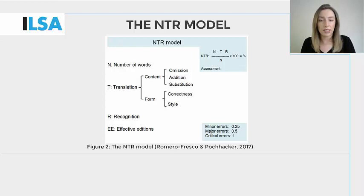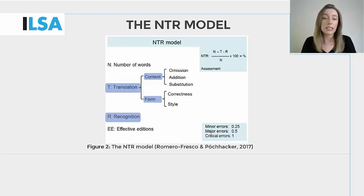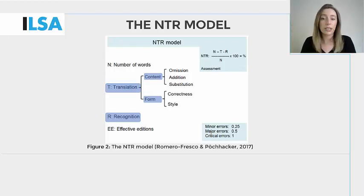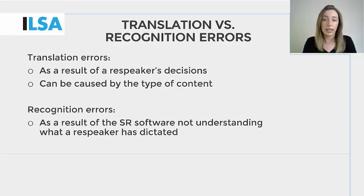The NTR model features a set of categories for scoring the accuracy of content and form, as well as a three-level grading scale for translation and recognition errors. Translation errors can be assessed as either content errors or form errors, and we'll take a closer look at the definitions of these types of translation errors in a minute. The R stands for recognition errors, so that's the same as the NER model. But there are some differences in terminology between the two models. For example, correct additions in the NER model are referred to as effective additions in the NTR model. Different terms are used for error severity, although the same principles do apply.